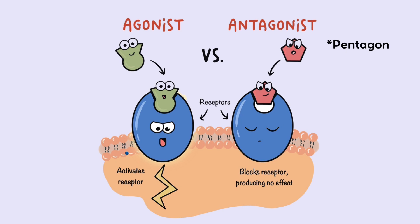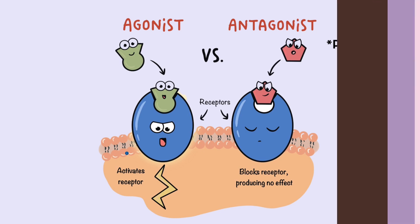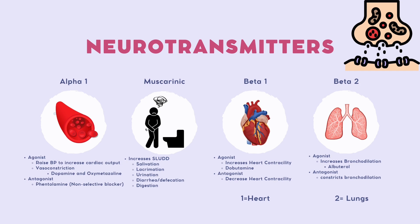Moving on to neurotransmitters — different medications can work as either agonists or antagonists on these neurotransmitter receptors. On the agonist side, the molecule fits into the receptor perfectly, which activates it. On the antagonist side, the molecule does not fit the receptor and therefore blocks it, producing no effect. It's very important to understand how these work, because if you do, you'll understand the mechanism of action for these medications as well.